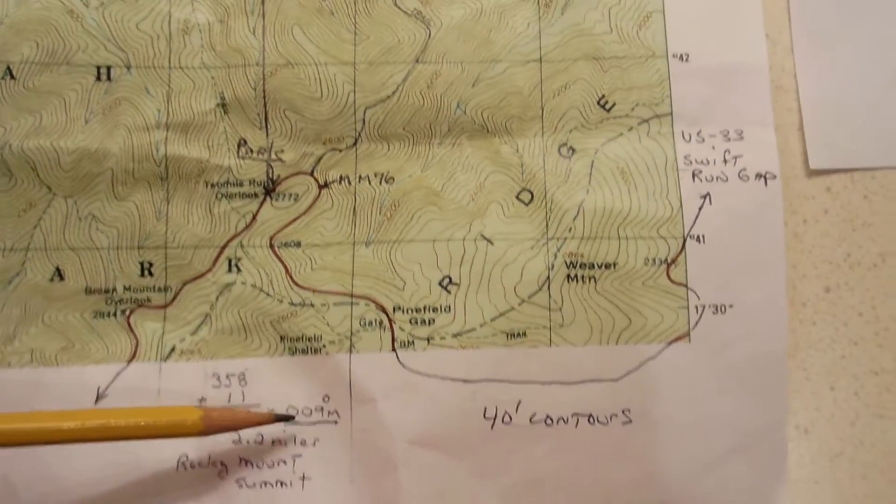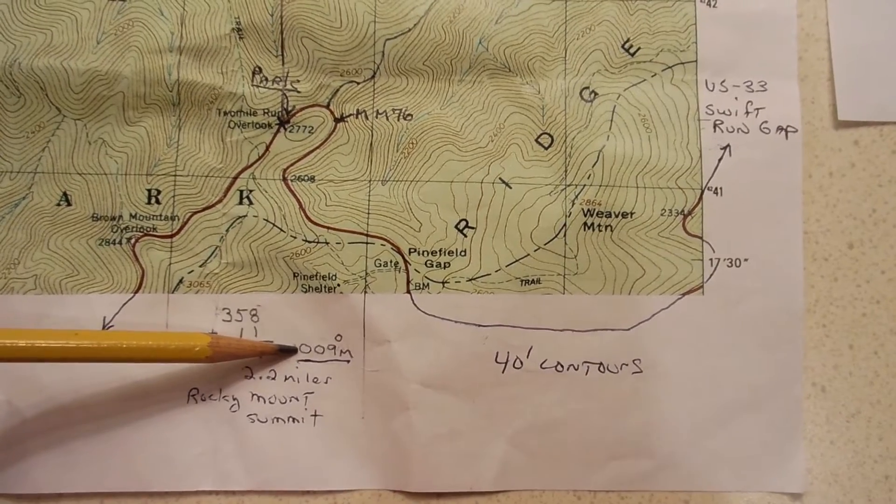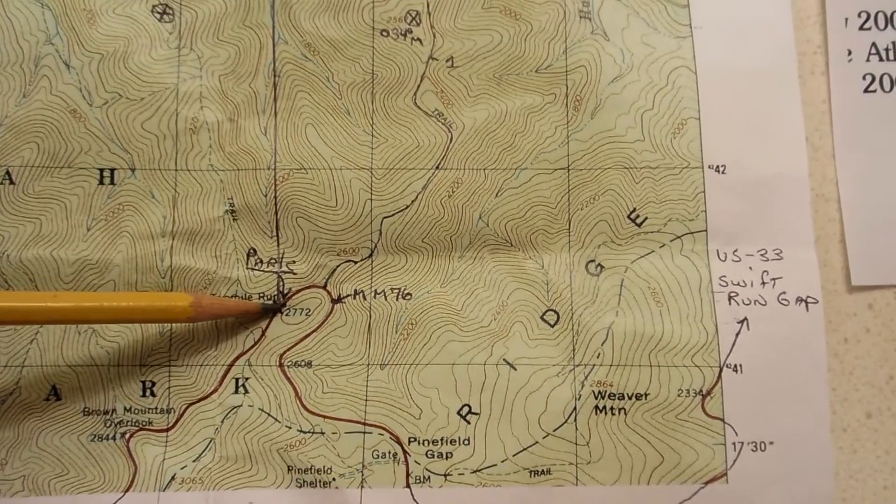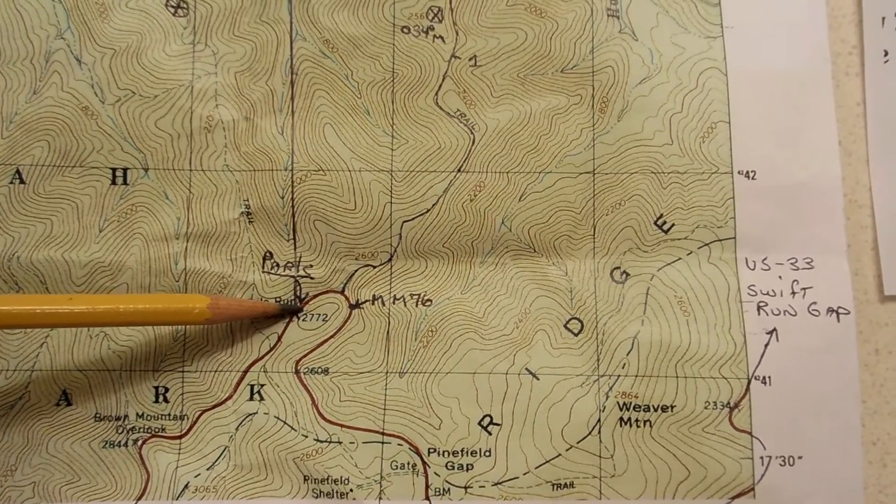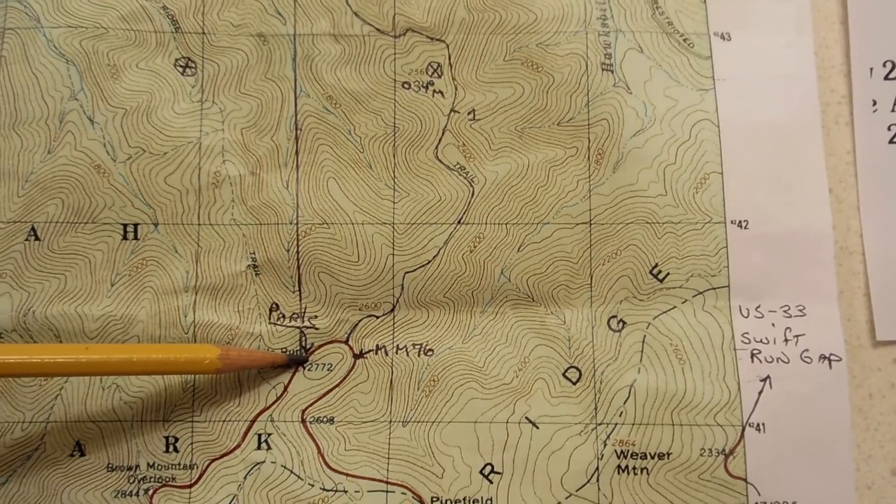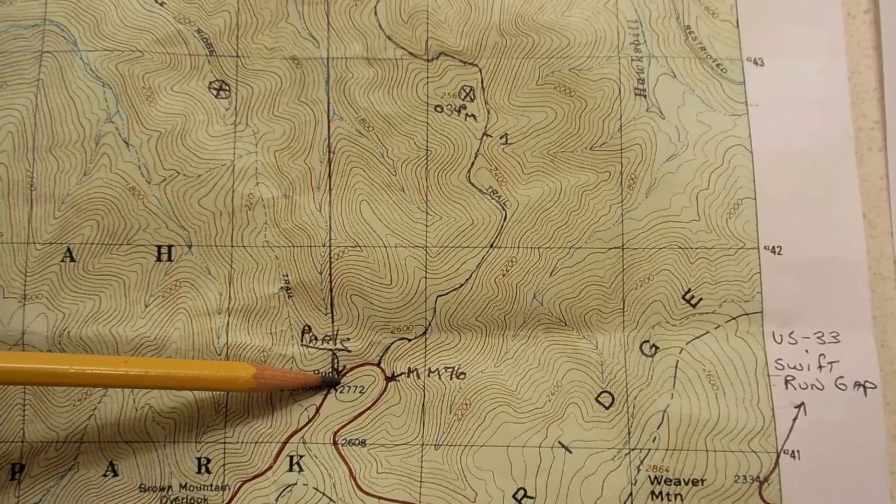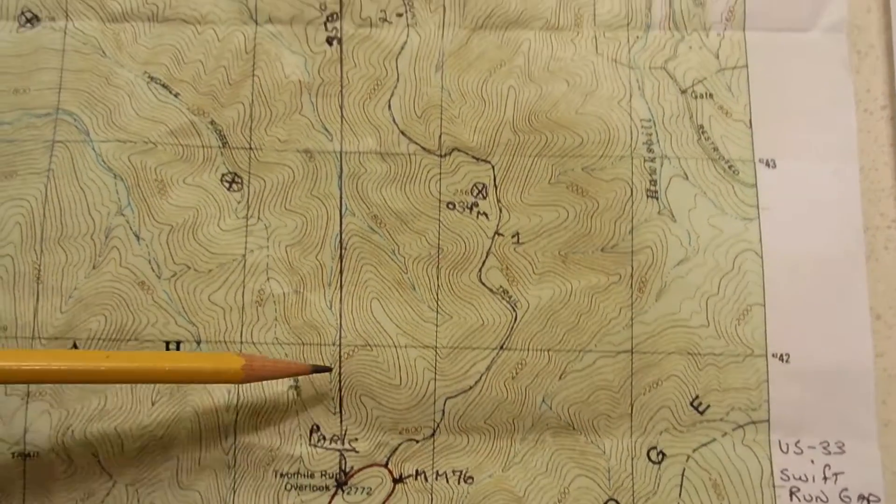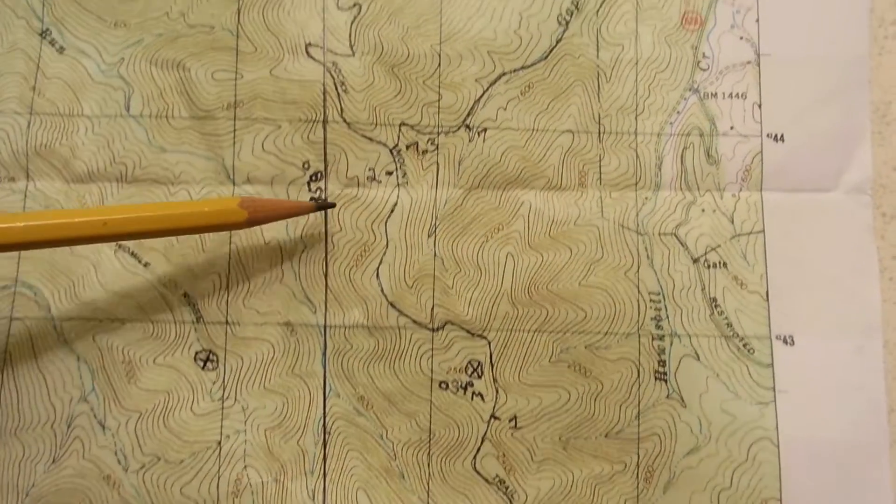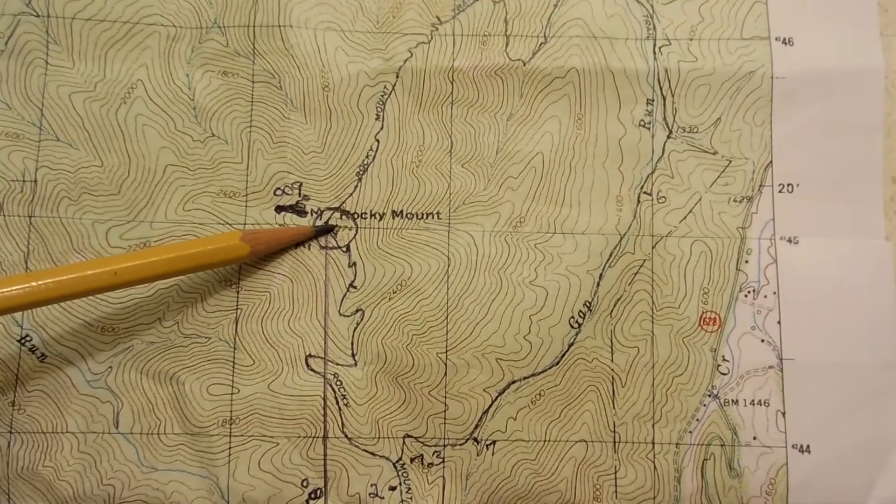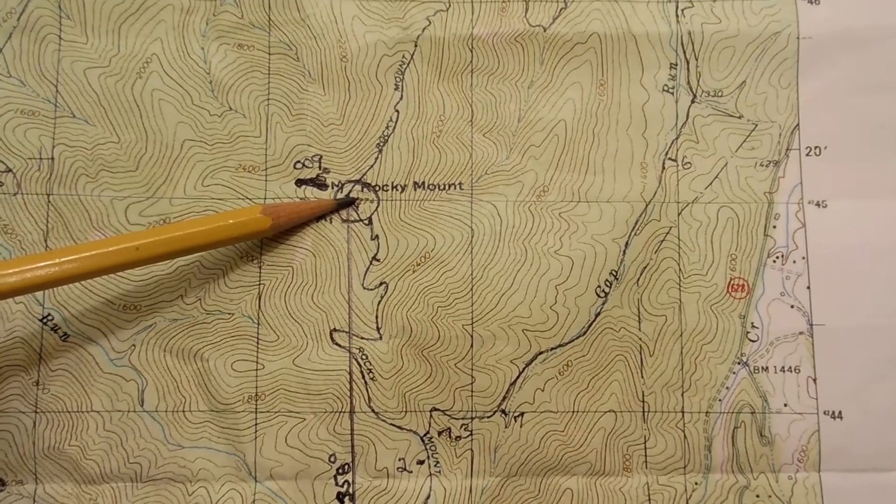So that's my answer. A magnetic bearing is 009. So when I'm standing here at the overlook, if I get my compass out and I dial it up to 009 magnetic, it will be pointing straight at Rocky Mount Summit.